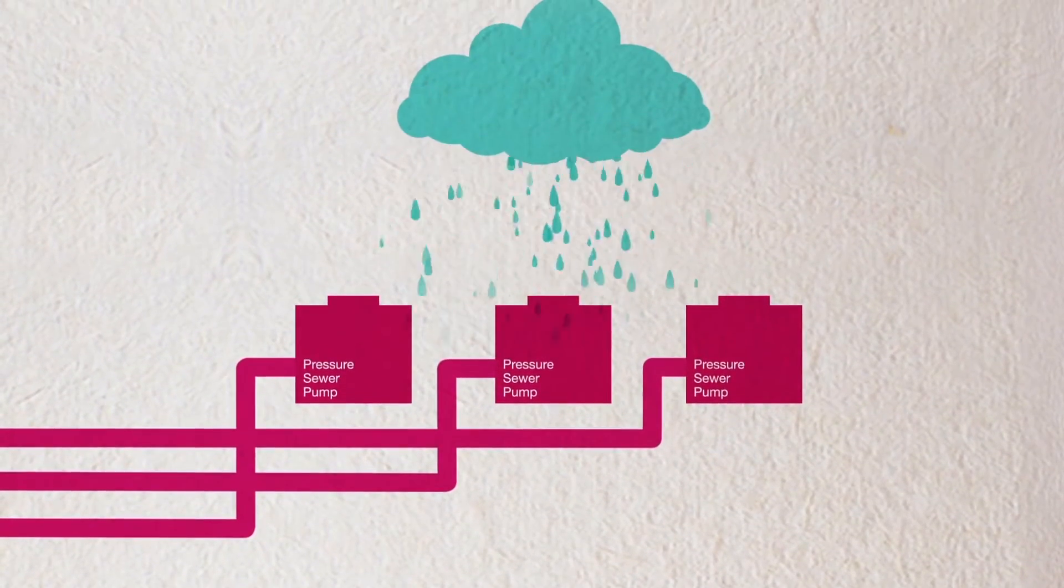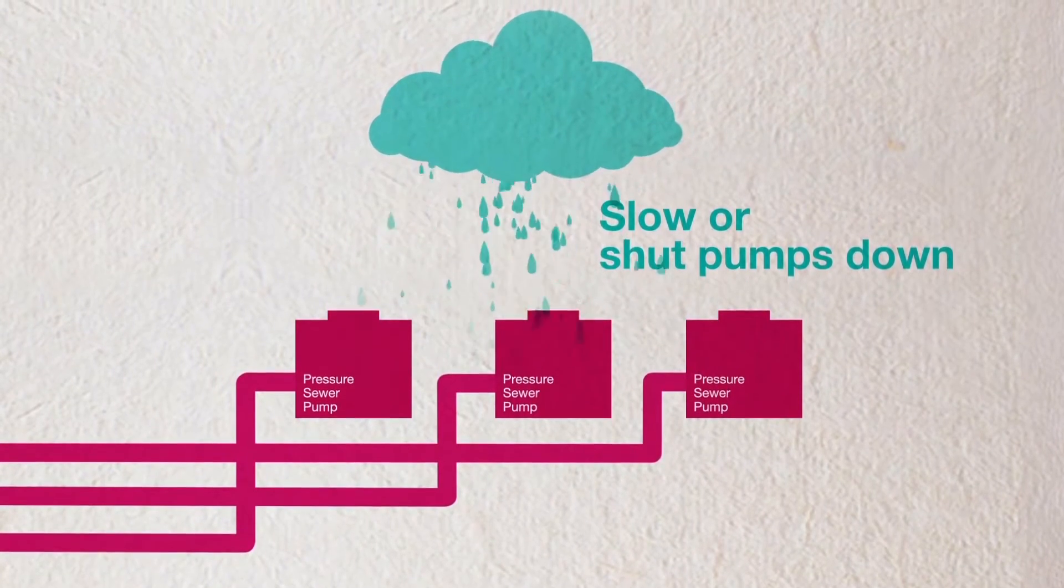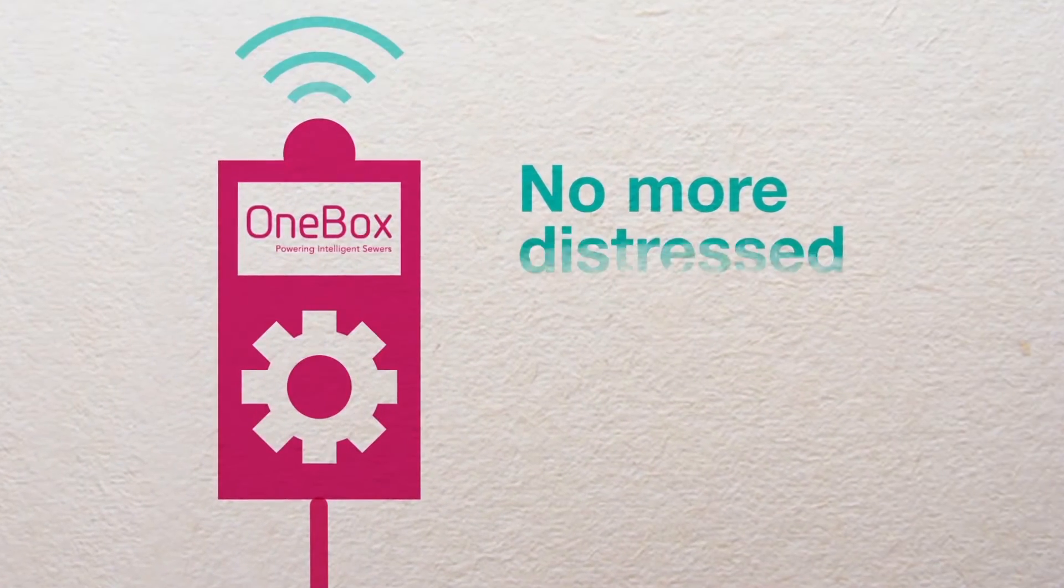In times of high rainfall, we can slow or shut the pumps down and wait for the storm to pass. We no longer have to wait for an event to happen and can be ahead of emergency issues.